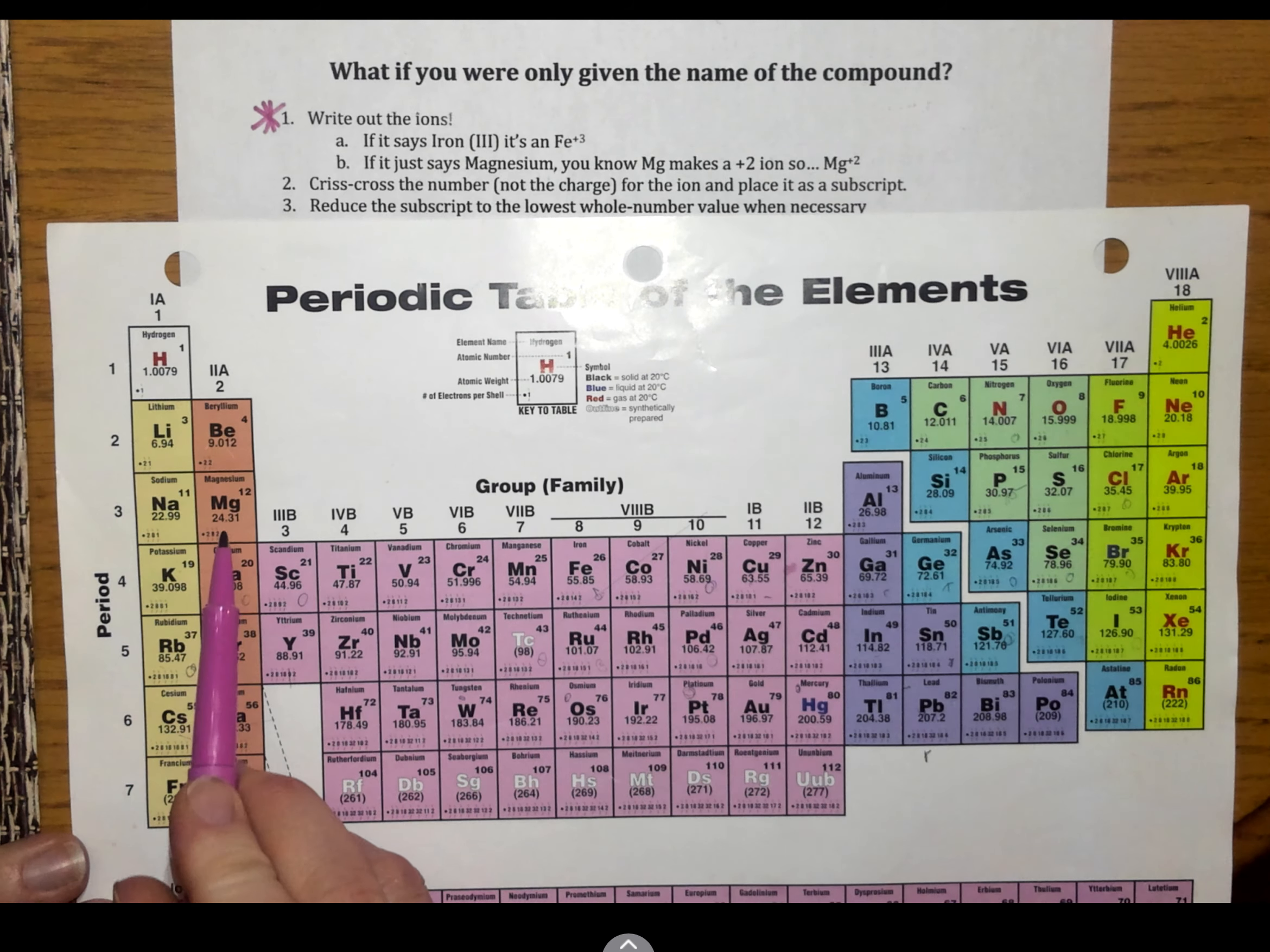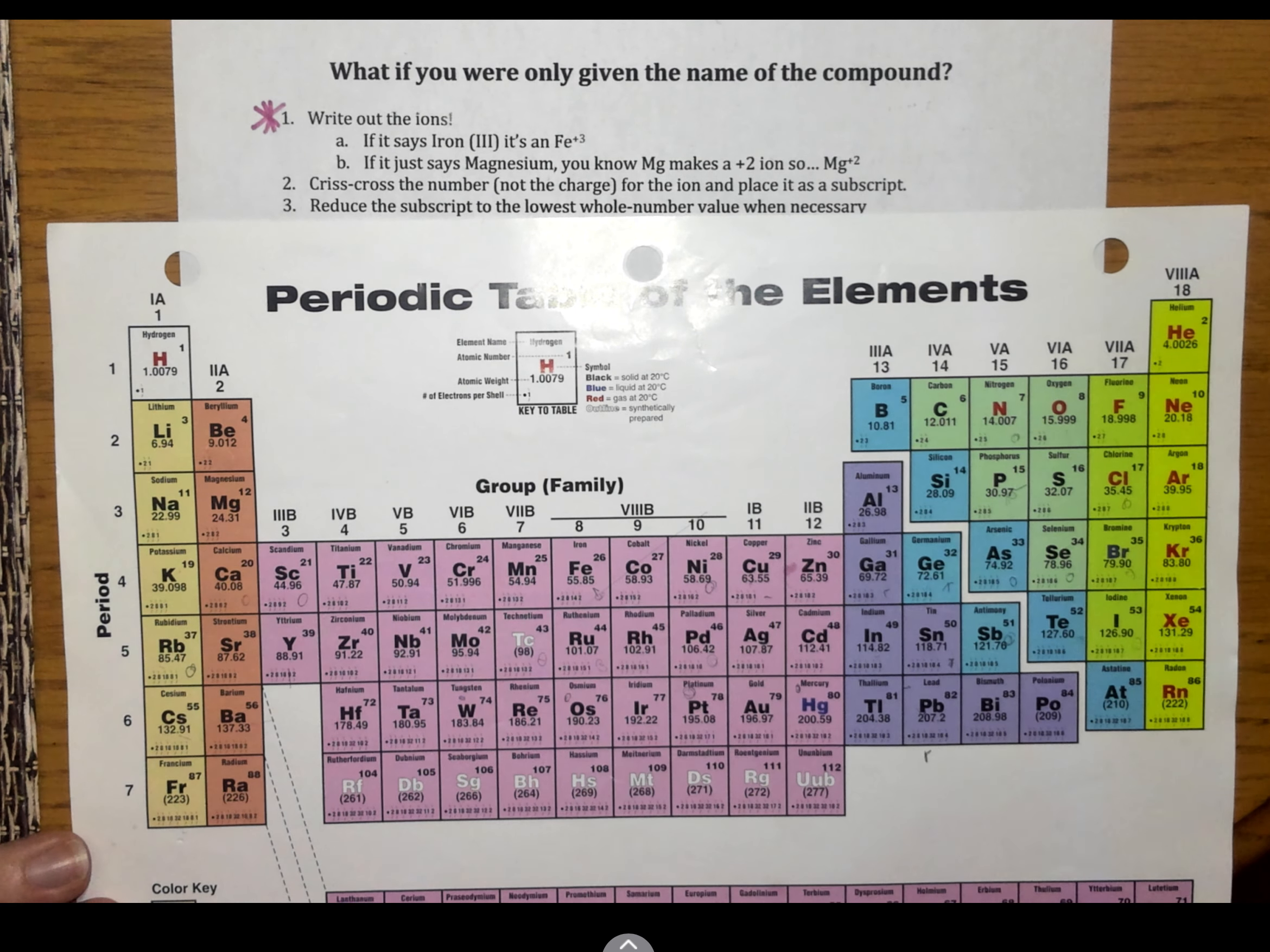So, sometimes when we're looking at compounds, we might be looking at the fact that it says iron 3. Now, these Roman numerals tell me that iron in this compound has a plus 3 charge. But, if it were to just say magnesium, we can find magnesium, and we know magnesium is a plus 2.